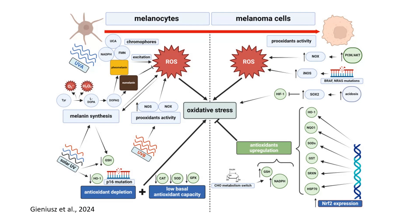In melanocytes, basal levels of antioxidant enzymes like catalase, superoxide dismutase, and glutathione peroxidase are low, contributing to their vulnerability to oxidative stress. At the core of this process is oxidative stress driven by the accumulation of ROS. In melanocytes, oxidative stress leads to DNA damage, impaired cell function, and apoptosis. As melanocytes progress toward malignancy, oxidative stress becomes a driving force for genetic mutations and metabolic reprogramming.